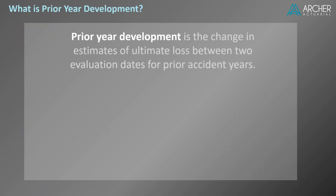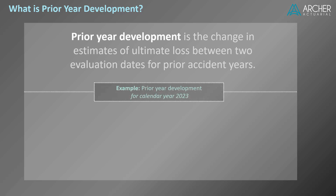Prior year development is the change in estimates of ultimate loss between two evaluation dates for prior accident years. Let's start exploring this concept with the help of an example of prior year development, specifically for calendar year 2023. We're going to begin by focusing on the first part of the definition: prior year development is the change in estimates of ultimate loss between two evaluation dates.